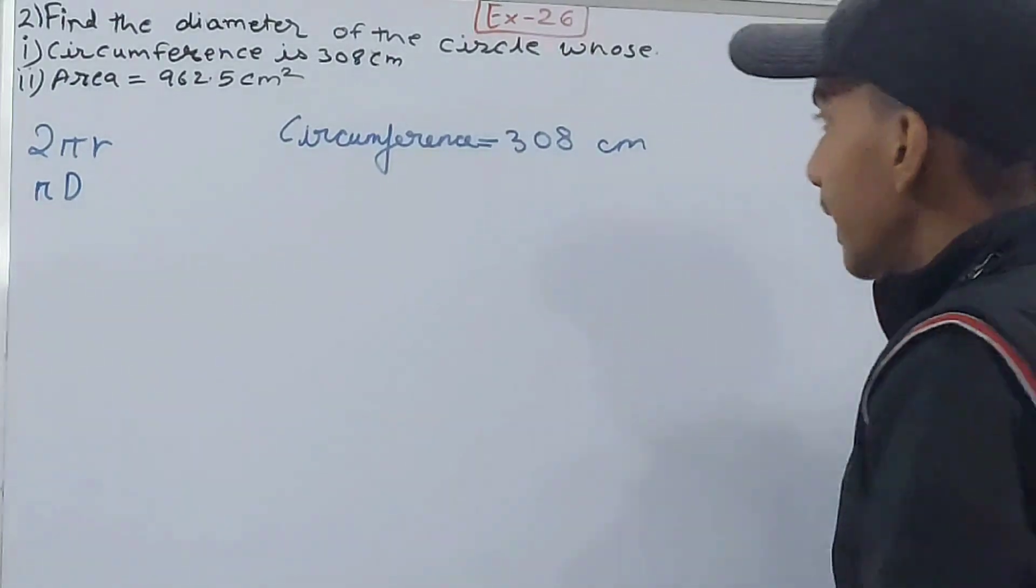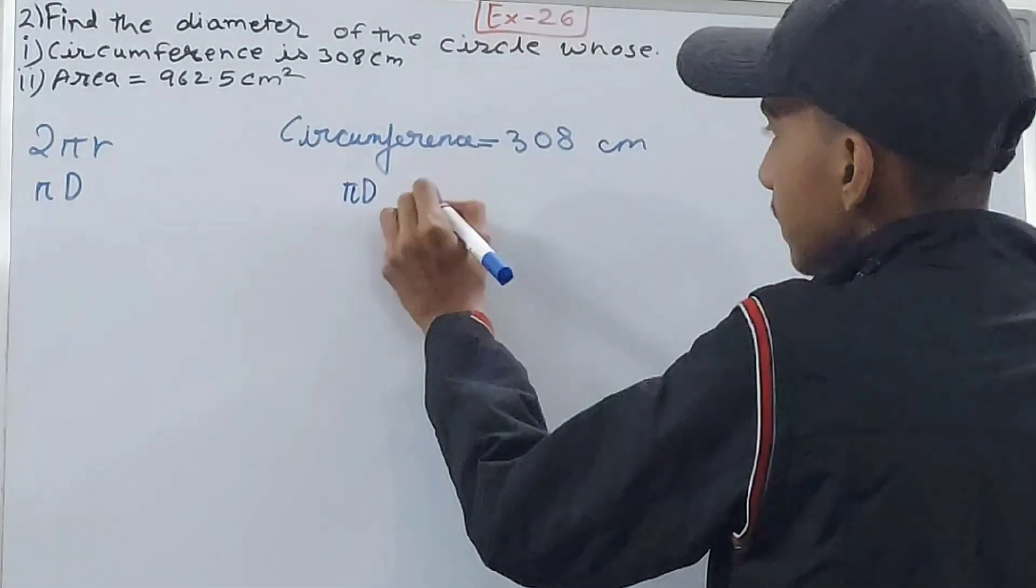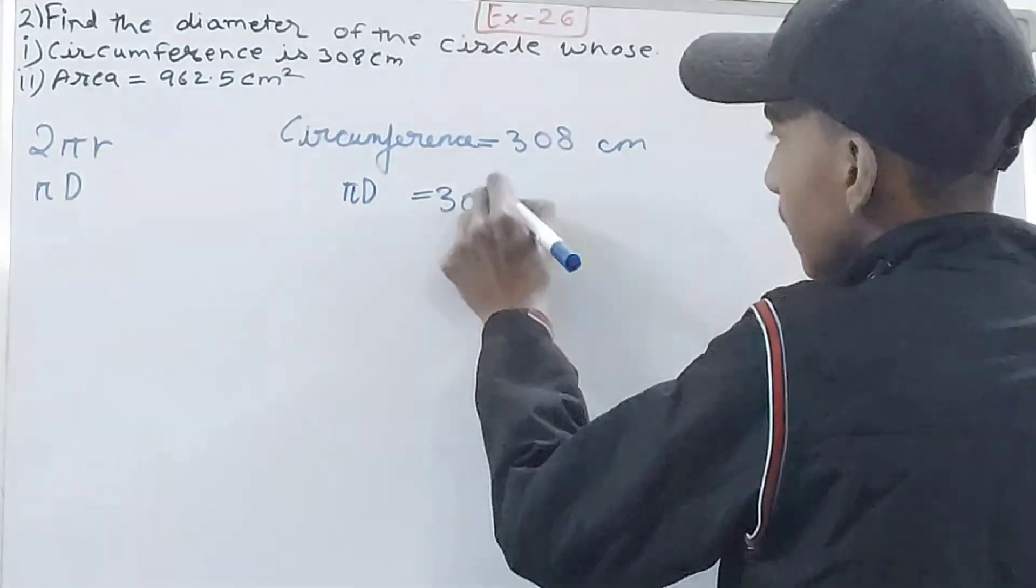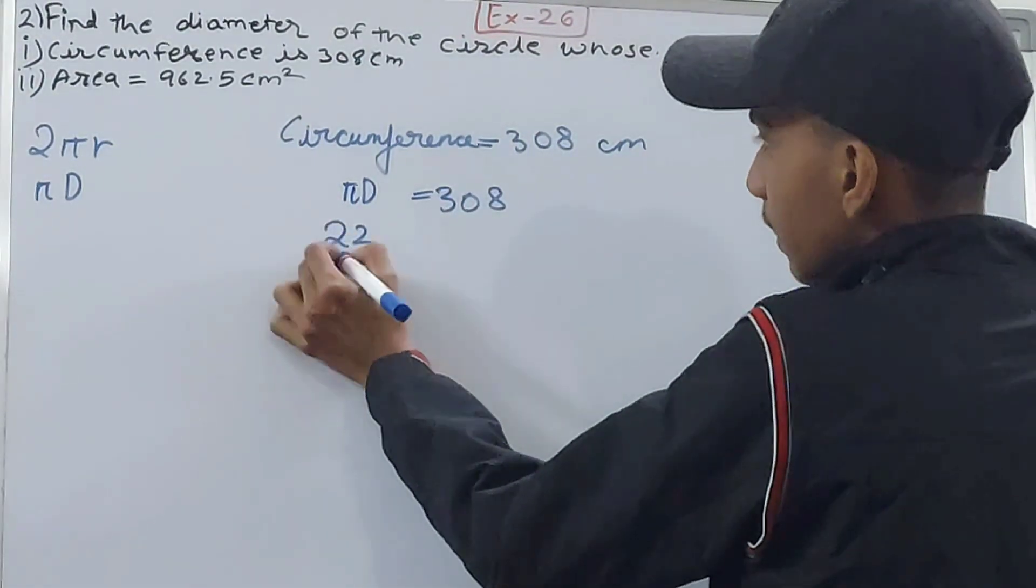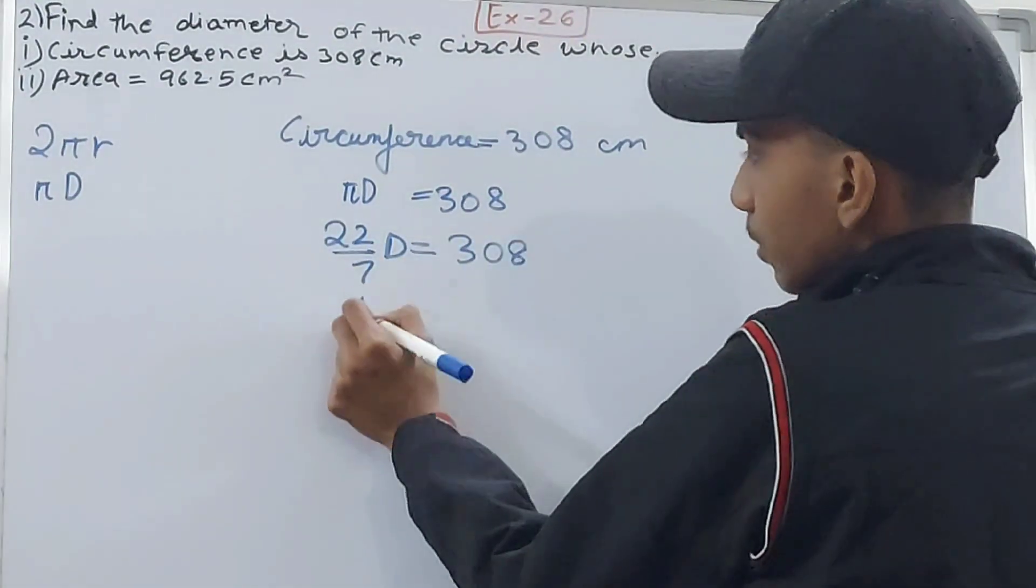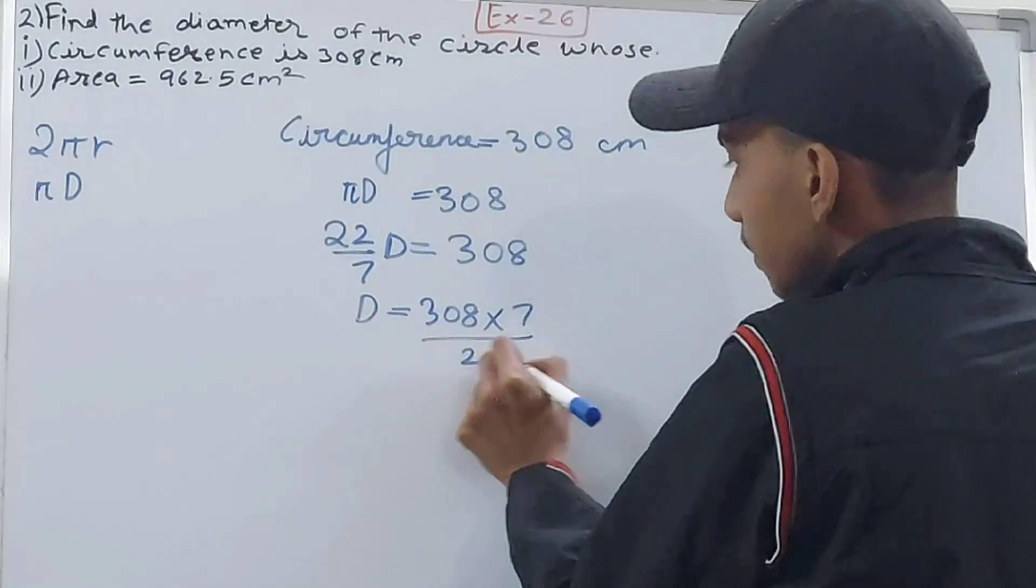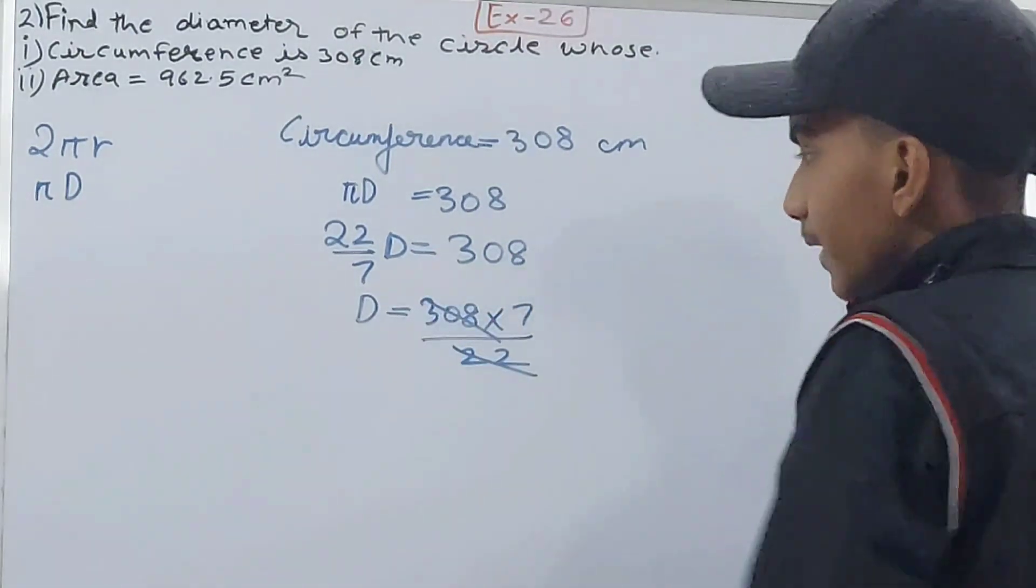So in place of circumference, πd equals 308. So π is 22/7, d equals 308. So diameter I can calculate: 308 × 7 ÷ 22.